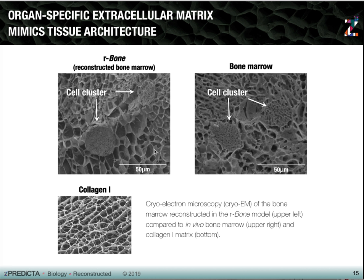In contrast, the scanning cryo-EM image of collagen-1 on the bottom left does not mimic the bone marrow—it is very fibrous, while the marrow itself has this honeycomb structure with walls between different sectors. Having the correct extracellular matrix provides, one, the correct tissue architecture, and two, the correct environmental cues for tissue development and survival.